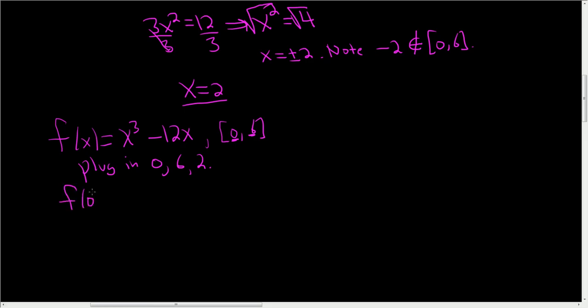So f of 0. That'll just be 0 cubed, which is 0 minus 12 times 0, so that's 0, so we get 0.